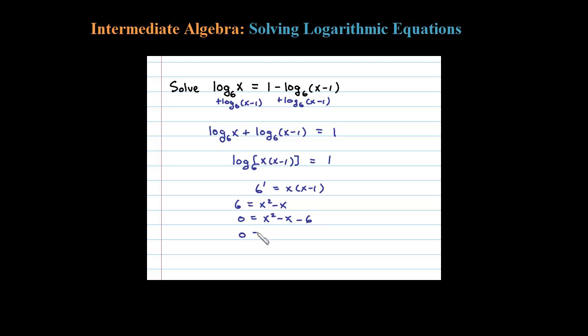We're going to try to factor this. This thing should factor: x and x, 6 breaks up as 2 times 3. 2x and 3x add up to negative x if the 3 is negative and the 2 is positive.